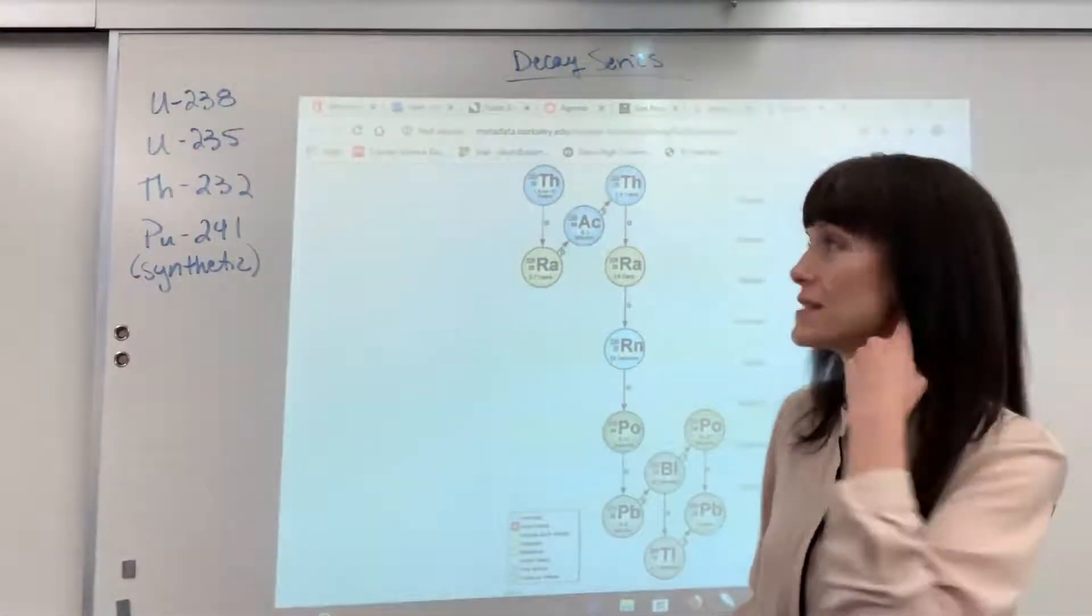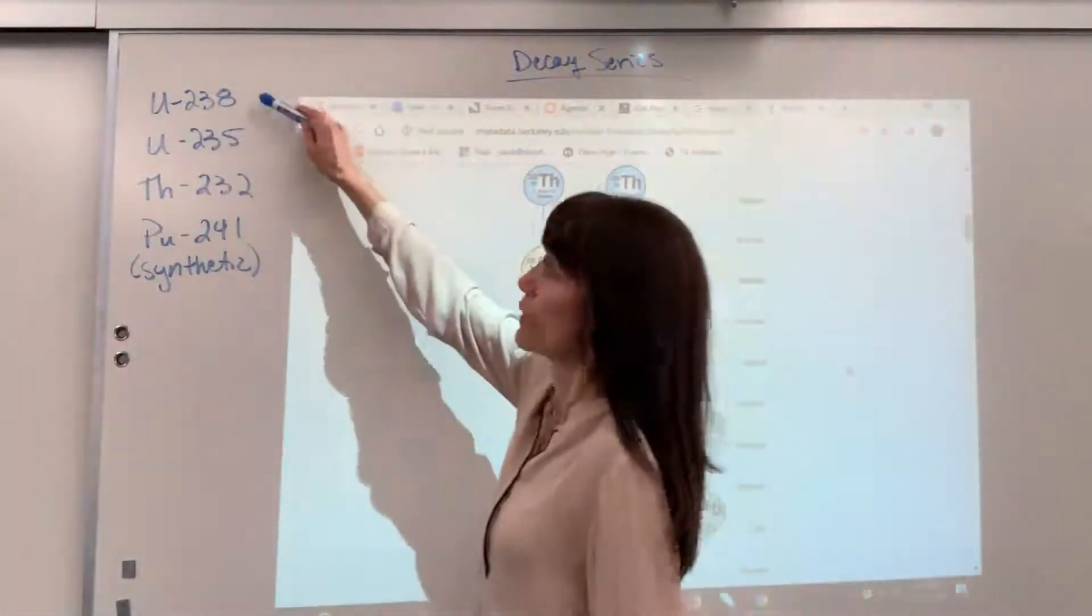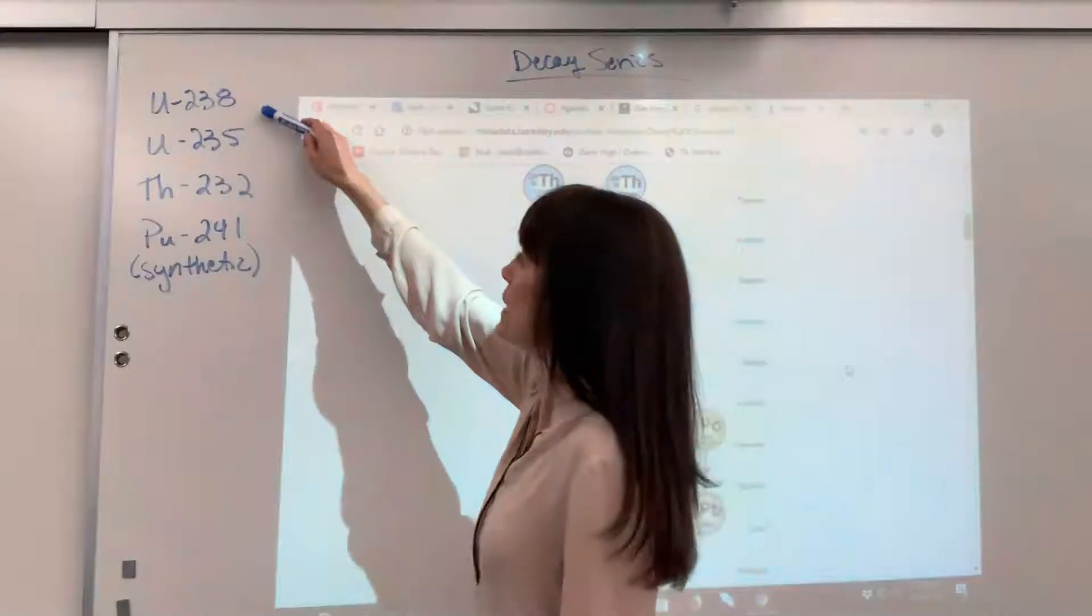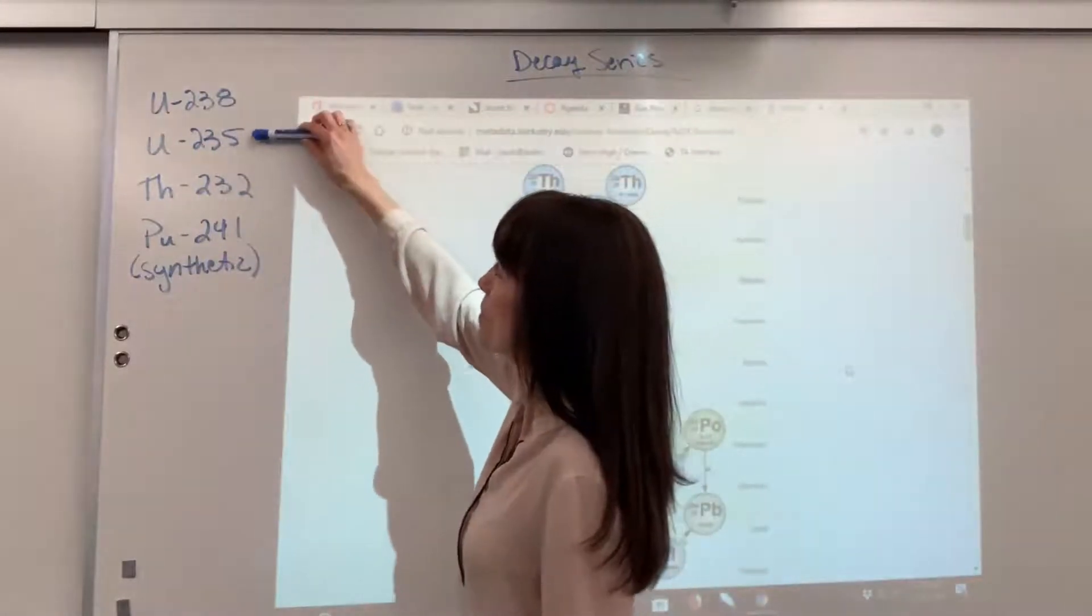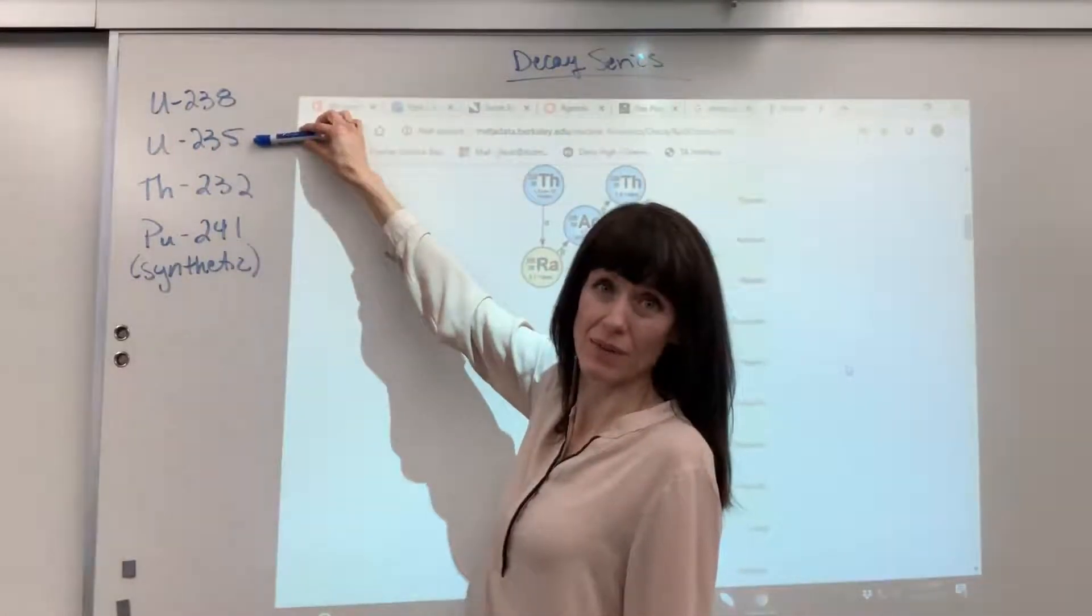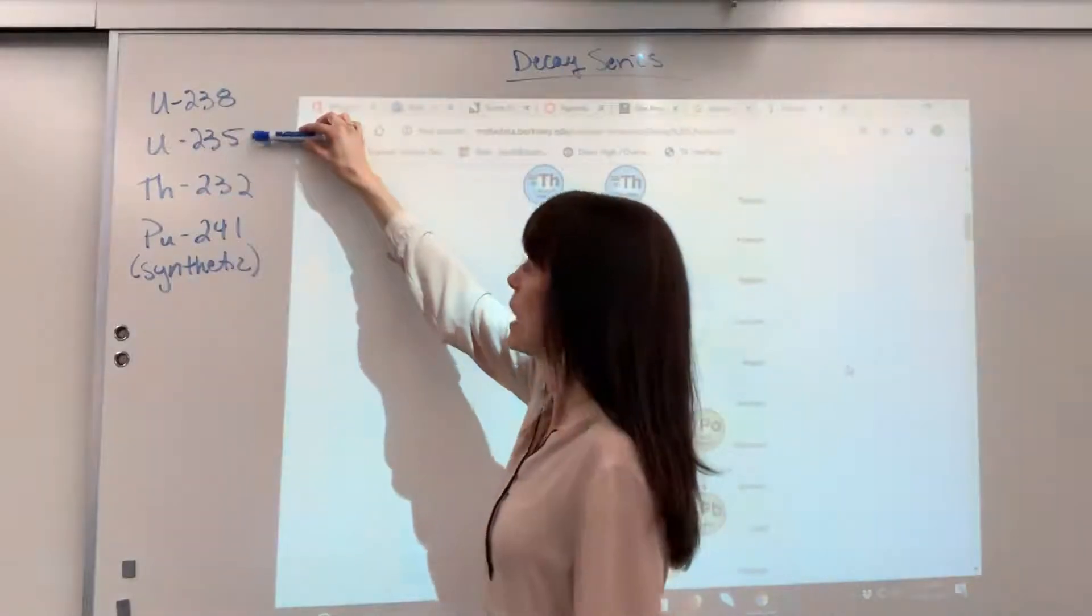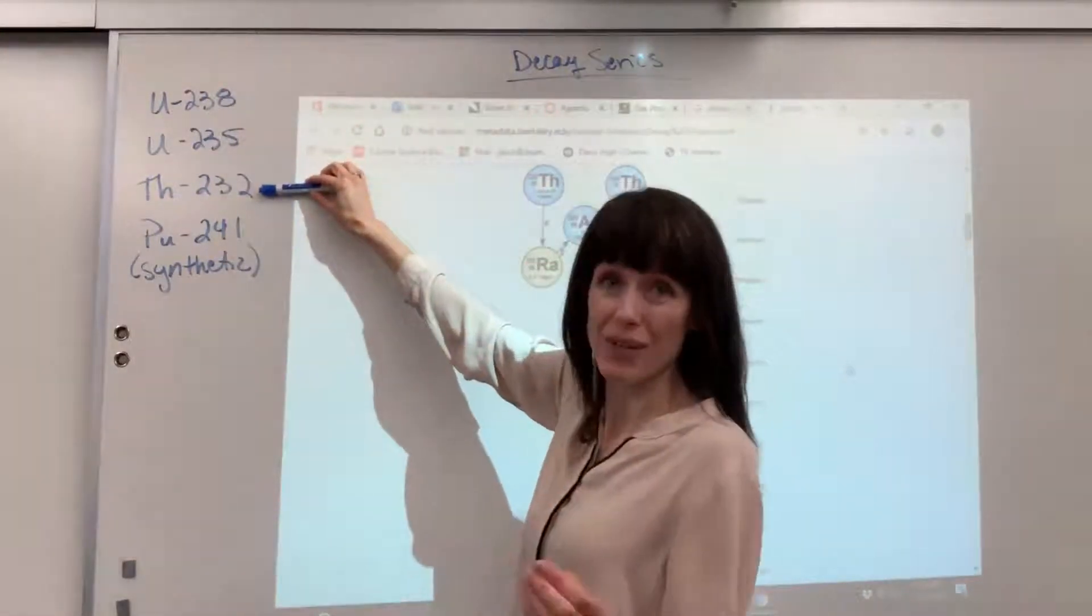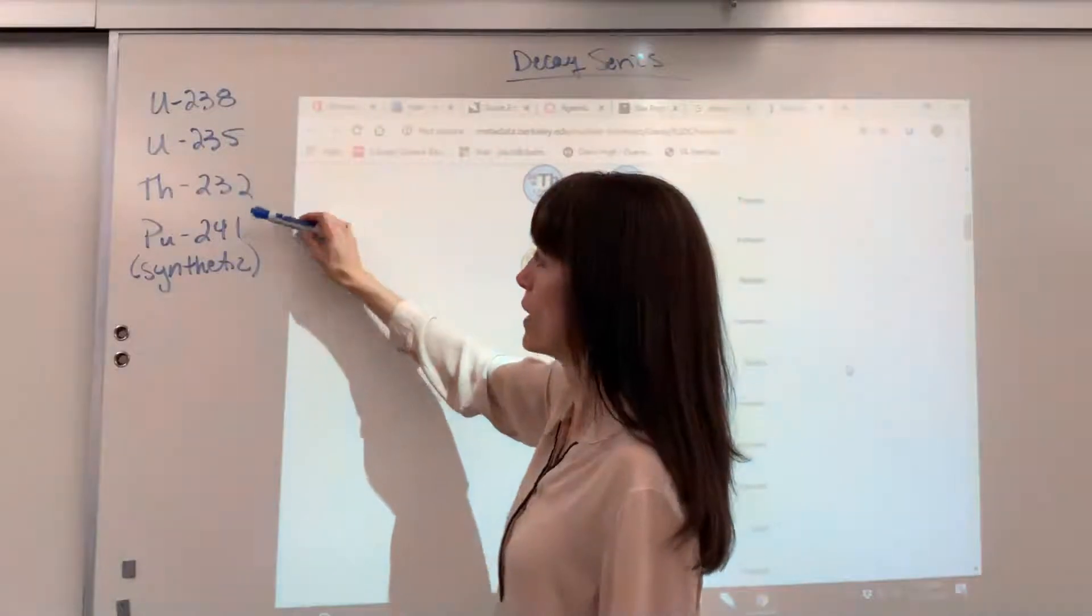Now we have four types of decay series. We have a uranium-238 decay, a uranium-235, remember that's our special uranium that we can make nuclear bombs from, thorium-232, and plutonium-241.